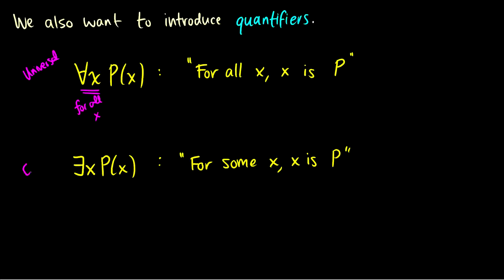The backwards E is known as the existential quantifier. This says 'there exists at least one x'. So '∃x, Px' can be read as 'for some x, x is P' or 'there exists an x such that x is P' — for example, 'there is some x such that x is happy'. Quantifiers give us much more strength when translating sentences into English as well as looking at truth conditions for certain English sentences, scenarios, or even mathematical operations.